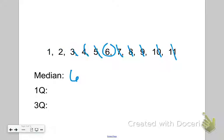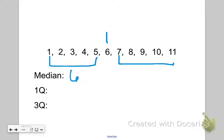I'm going to take a line and write it above the 6. Now I've got my lower half, which is 1 through 5, and my upper half, which is 7 through 11. Remember, 6, the median, does not get included in the lower half, nor does it get included in the upper half — it's separate. Let's cross them off and work our way to the middle for the lower half, and it looks like 3 is our first quartile, or our lower quartile, and I just put a line above it.